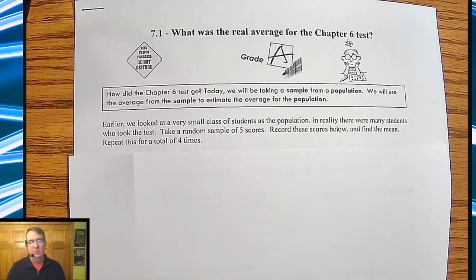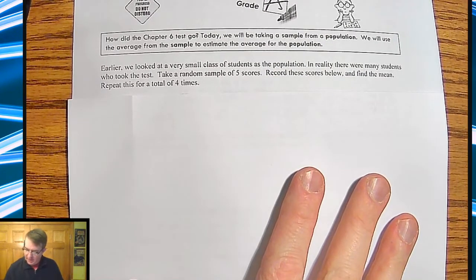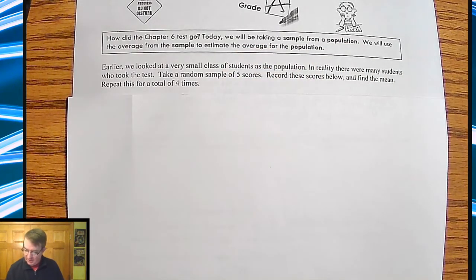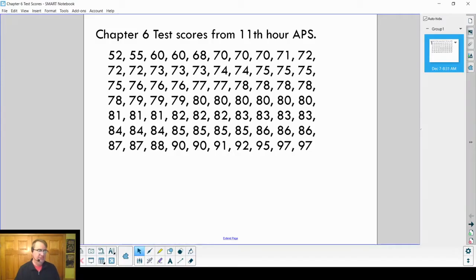So with that said, what we're going to do is I'm going to show you what we did last year in terms of the data, and we're going to get a little bit more specific with what's going. So what we ended up doing is we took a very small class of students' population. In reality, there were many students who took the test. And so what I ended up doing is I put on my board this, and I said, okay, here are 70 scores. And I did 70 because it was going to be easy to count. I've got seven rows of 10.